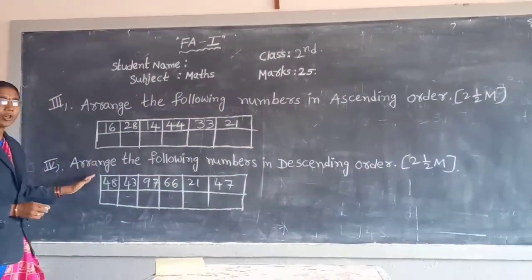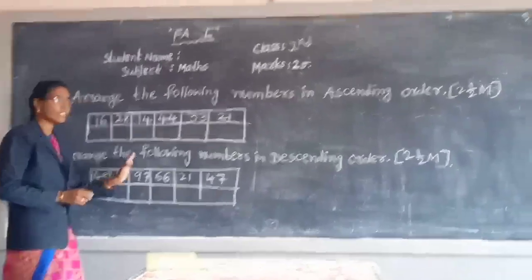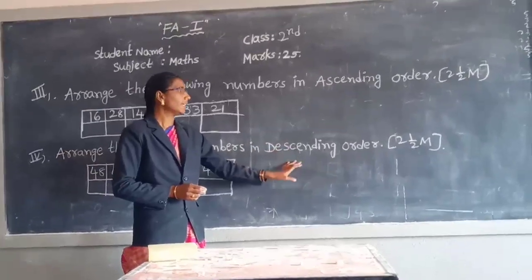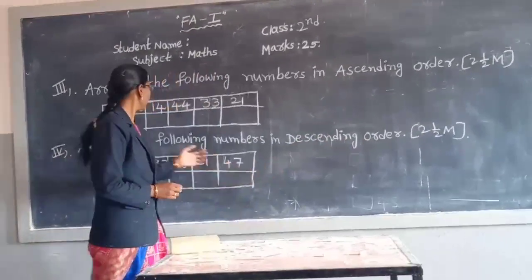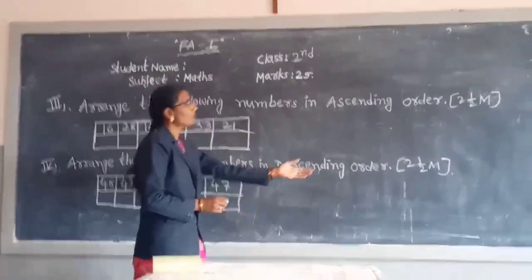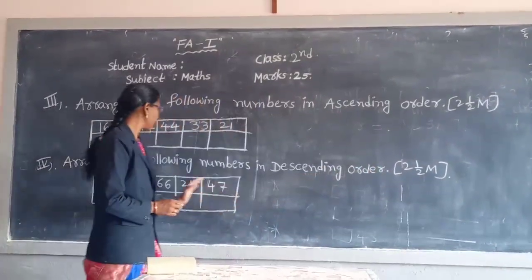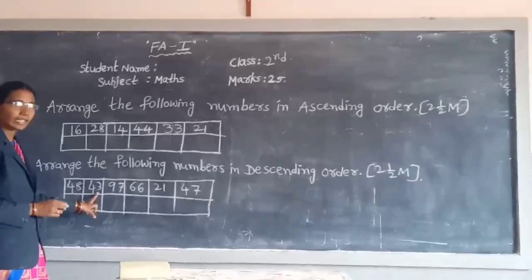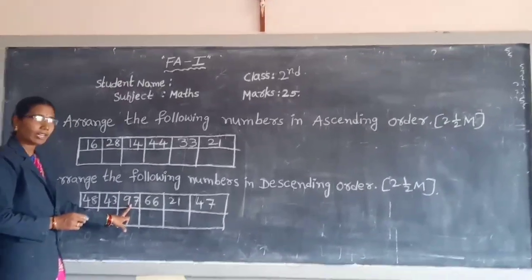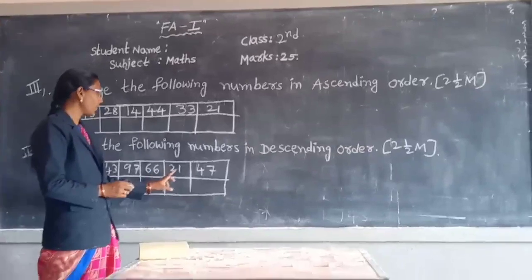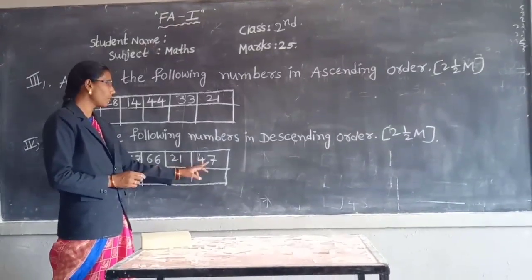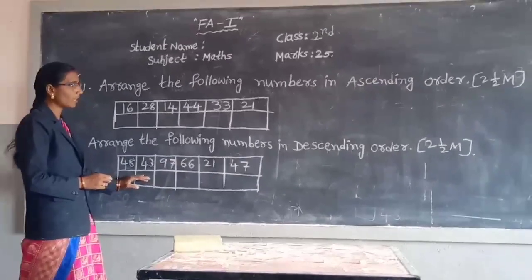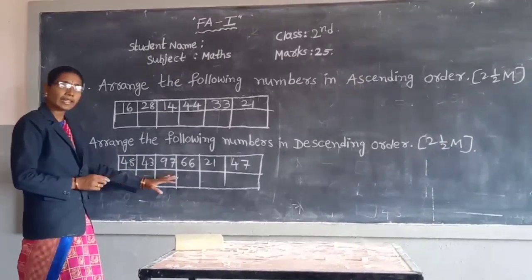Next, fourth means: arrange the following numbers in descending order. Fourth means: forty-eight, forty-three, ninety-seven, sixty-six, twenty-one, forty-seven. Write the numbers in descending order.